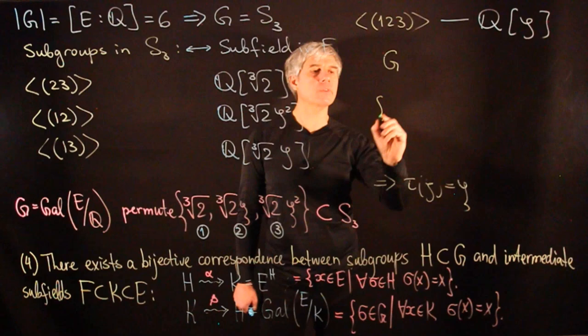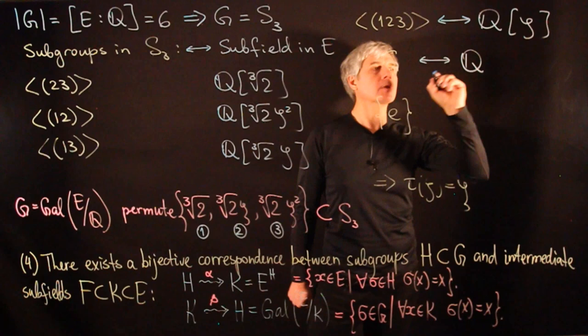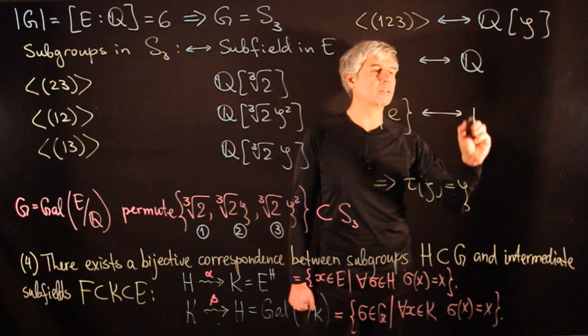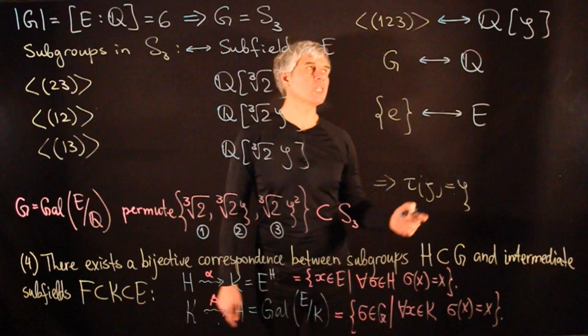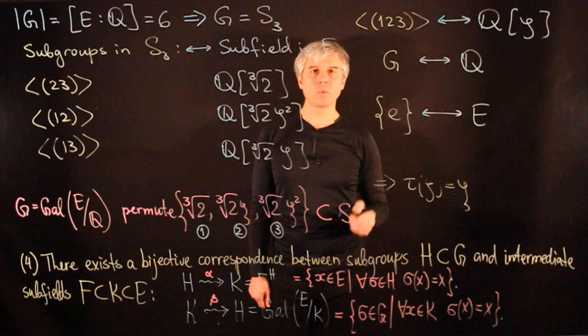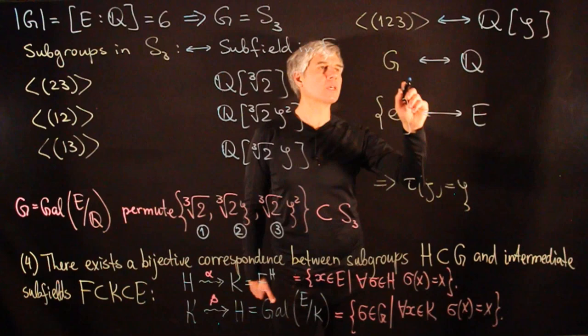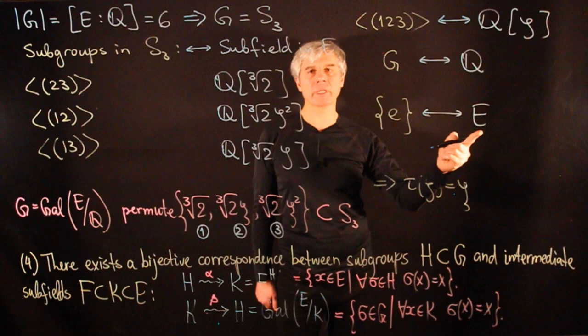Finally, we have the two trivial subgroups in G: G itself and the identity subgroup. Part one of our theorem says the fixed subfield corresponding to the whole Galois group G is the field F = Q. By definition, the set of elements fixed by the identity is the whole field E. Since this is the complete list of subgroups inside S₃, by the Galois correspondence theorem, this is a complete list of subfields inside E. We observe that bigger subgroups correspond to smaller subfields: the Galois group G itself corresponds to the smallest subfield F, and the identity subgroup corresponds to the largest field E.